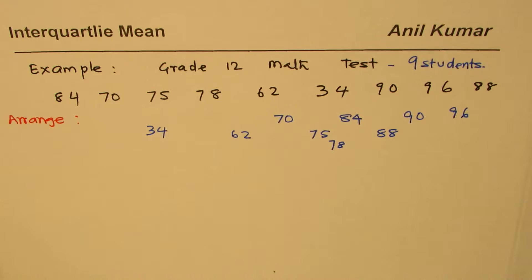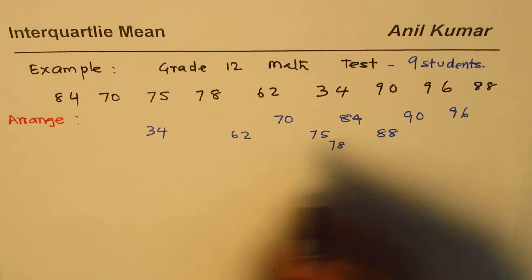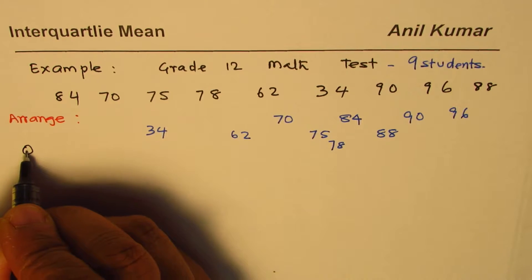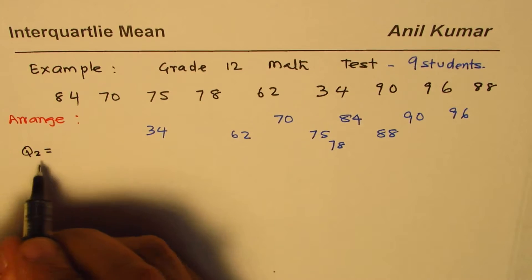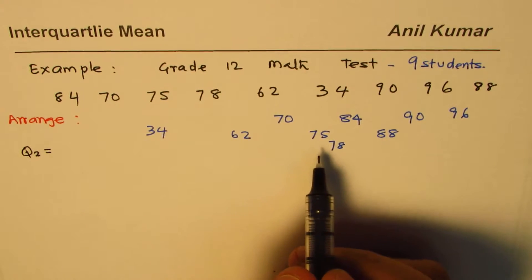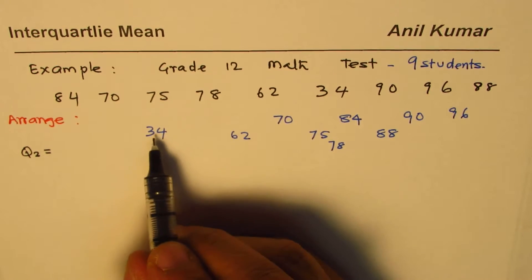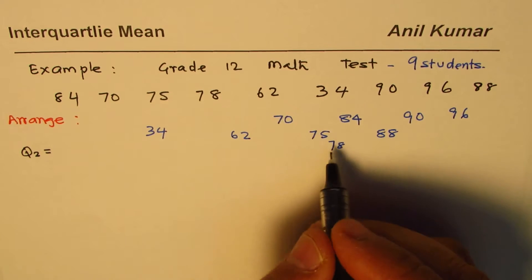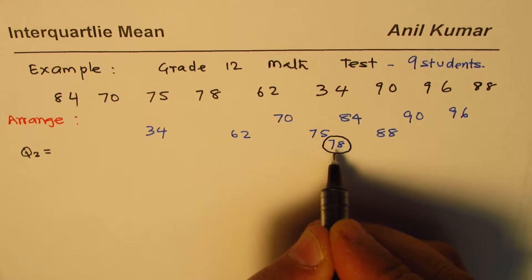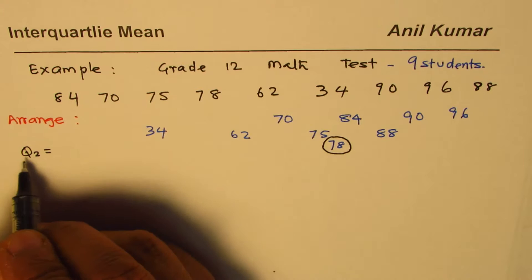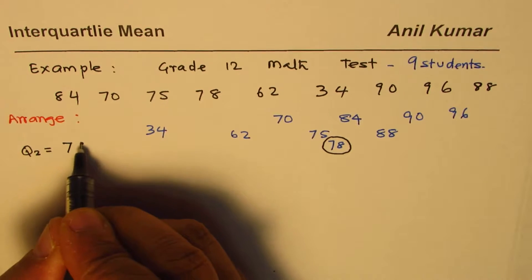Now if we have nine marks in the list, what is the median or second quartile? The second quartile is the middle value, so that is the fifth. One, two, three, four, fifth. So this value gives us Q2, so we get 78.